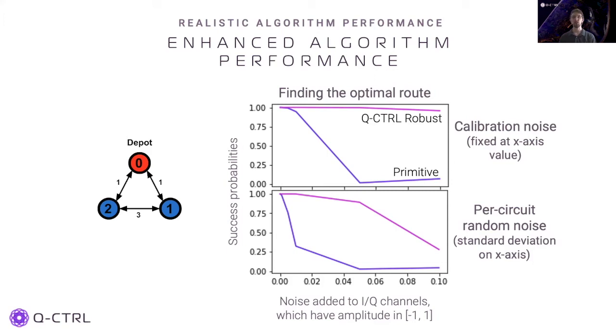In the top figure panel, we look at calibration noise. Here a fixed amplitude noise is added to the i and q channels throughout a given application of the algorithm. The dimensionless noise value on the x-axis scales from 0 to 0.1, which should be considered in reference to the scale of the i and q channels between minus 1 and 1. The algorithm with robust pulses has much lower susceptibility to calibration noise. Its success probability is sustained close to 1 as the noise increases, while the same algorithm with primitive pulses has a success probability that quickly decays close to 0 in contrast. The robust pulse algorithm has success probability up to 80 times better for calibration noise.